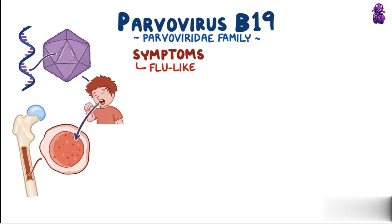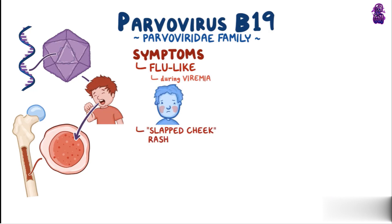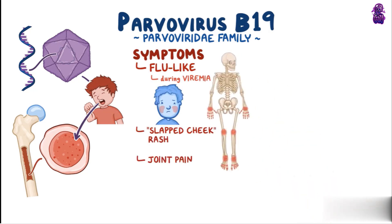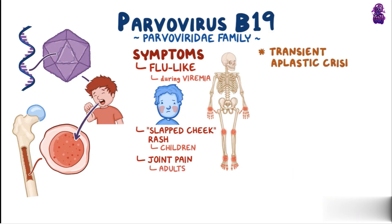Flu-like symptoms are common during the viremia phase of the infection, followed by a slapped cheek rash and/or joint pain. Children are more likely to show the rash, and adults tend to have the joint pain. Parvovirus B19 can cause transient aplastic crisis in individuals with underlying hemolytic disorders.